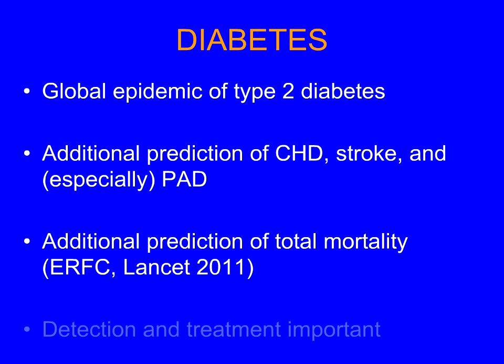So diabetics get more cardiovascular disease, more cancers, more infections, as shown in the recent publication from the emerging risk factors collaboration. Diabetes is bad for everything. And hence it's very important when you screen for cardiovascular risk, you screen for diabetes. You pick it up and treat it regardless of the other risk factors — it's important to treat the diabetes per se.